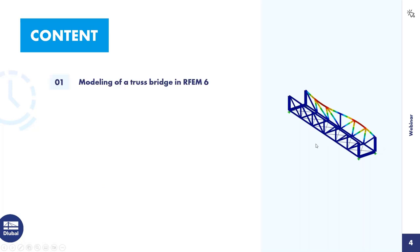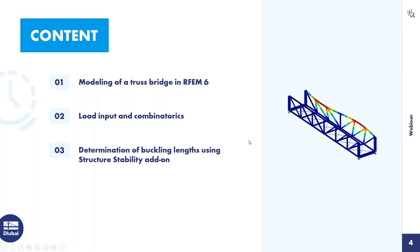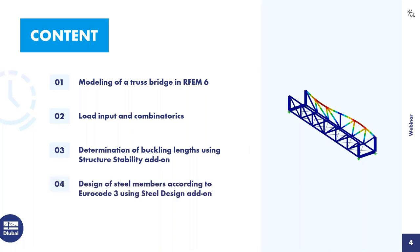For the agenda today: Oliver starts with the modeling of the truss bridge, then he will input loads and do the combinatorics, followed by the determination of buckling length using an eigenvalue analysis with the structure stability add-on, and finally the design according to Eurocode 3 with the steel design add-on.